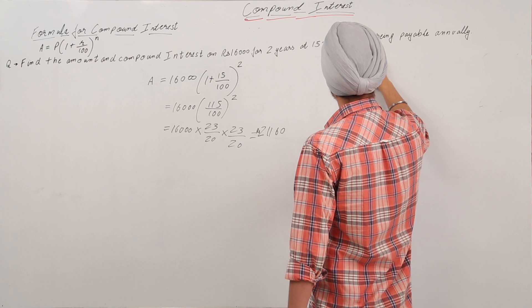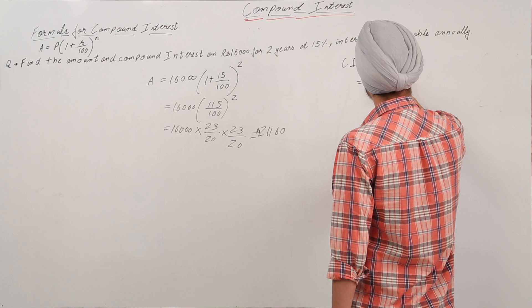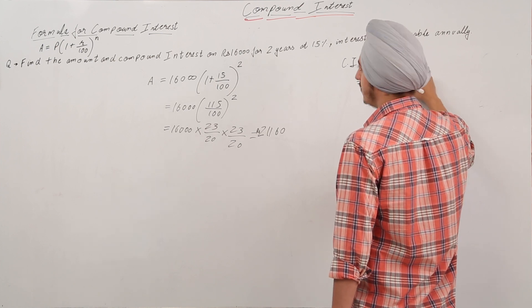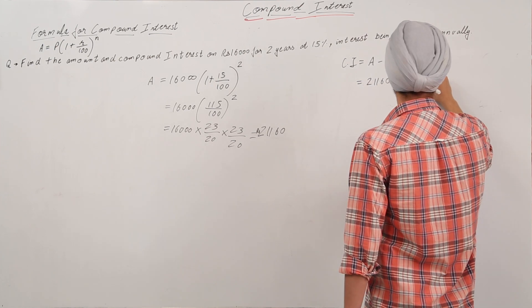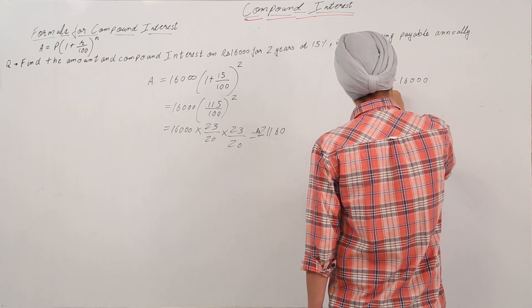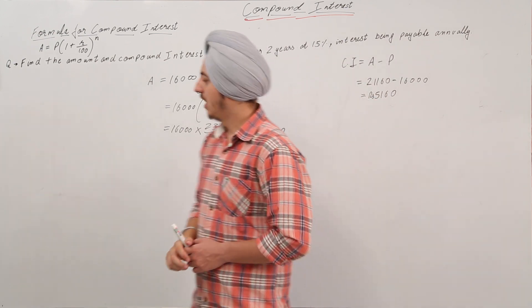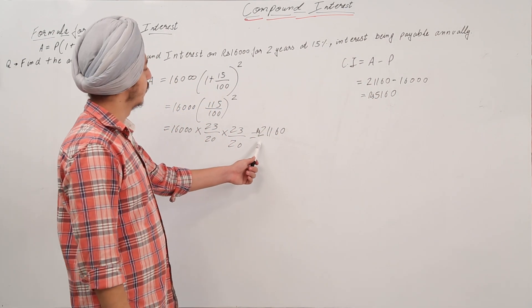The compound interest is equal to amount minus the principal, which is equal to 21,160 minus 16,000, which is equal to rupees 5,160.